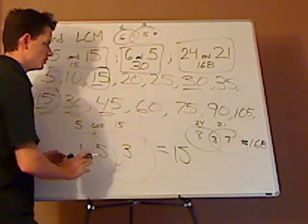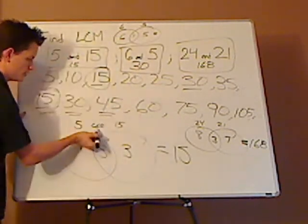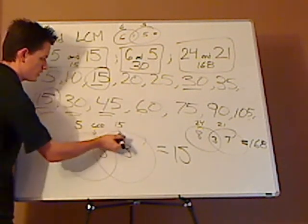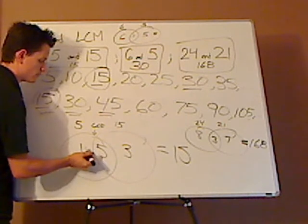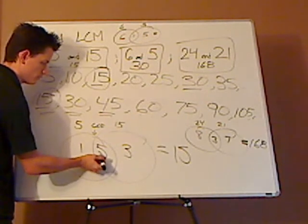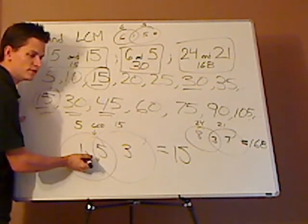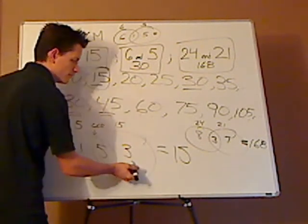And you find that by using the Venn diagram. Again, what you can do is you see what the GCF is. You see what they have in common. You put each number here. And then you ask yourself, okay, what times the GCF will give me that number? You put that number here.